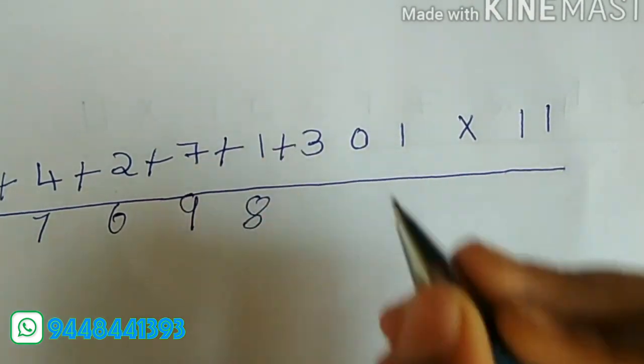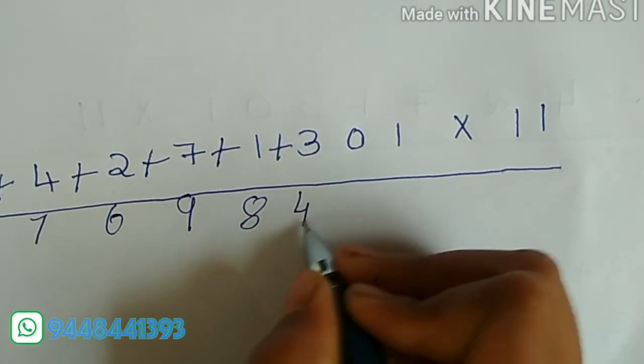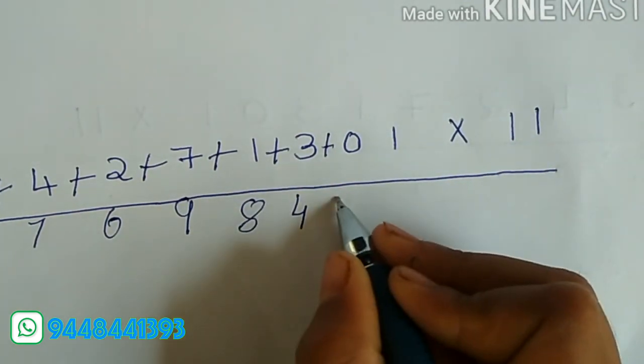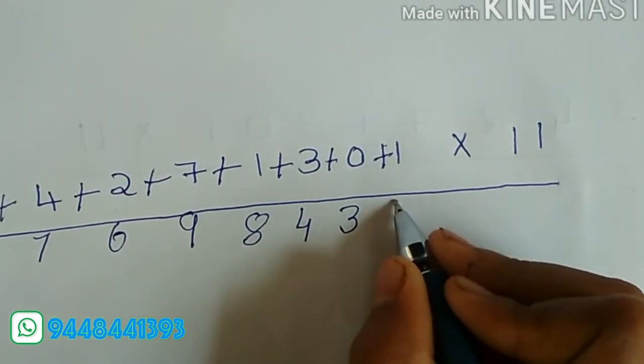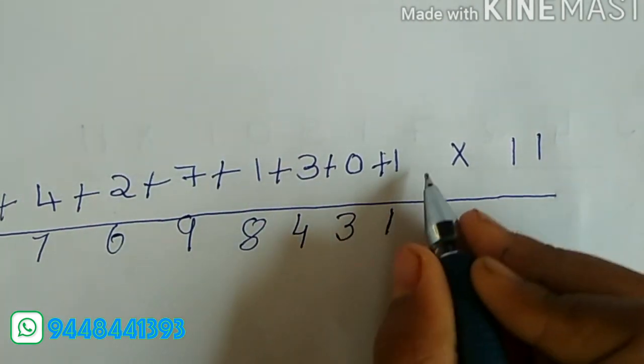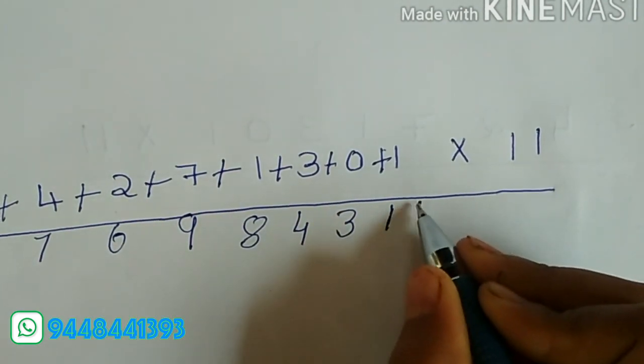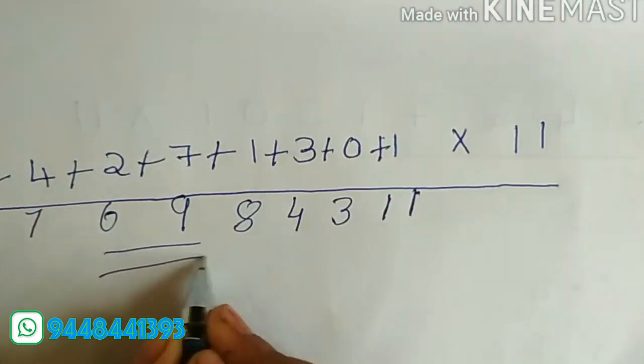Next, 1 plus 3, that is 4. Next, 3 plus 0, that is 3. Next, 0 plus 1, that is 1. Next, last number, write the same, that is 1. This is the final answer.